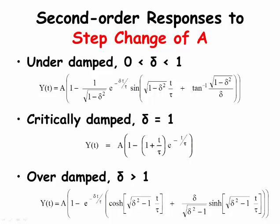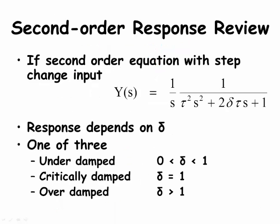This slide shows all three second-order process responses to a unit step change input — they all have long-term responses that reach 1. The response with overshoot and oscillations is underdamped; the fastest response without overshoot is critically damped; and the slowest response is overdamped. These characteristic responses depend on the value of delta: underdamped when delta is between 0 and 1, critically damped when delta equals 1, and overdamped when delta is greater than 1.